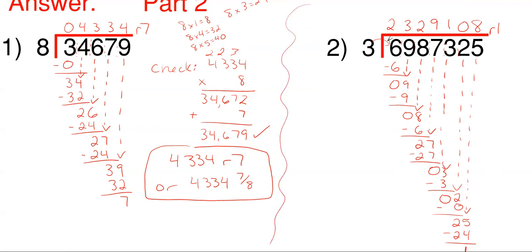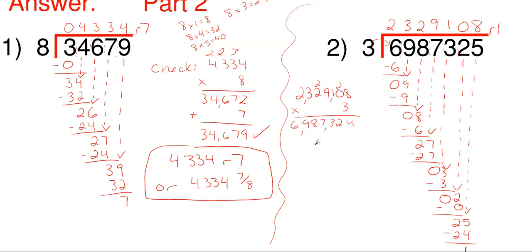Just like before, let's check our answer. We're going to multiply the number we calculated by 3. So we have 2,329,108 — put in some commas to help. Multiply that by 3: 3 times 8 is 24; 3 times 0 is 0, add 2; 3 times 1 is just 3; 3 times 9 is 27, add the 2 up here; 3 times 2 is 6, plus 2 is 8; 3 times 3 is 9; and 3 times 2 is 6. That's not exactly my number, but remember we have a remainder, so we add in that remainder of 1. We end up with 6,987,325, and that matches the original number. So yes, it does check out, meaning the answer shown is the correct one.